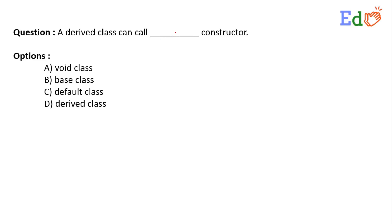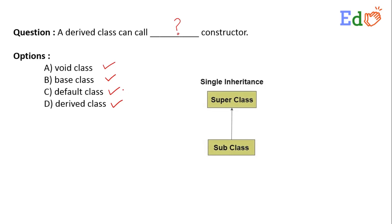In this question, we are asked: a derived class can call one blank space constructor. The options are: void class, void class constructor, base class constructor, default class constructor, and derived class constructor. We know that in case of single inheritance, we have one super class, also called the base class, and one subclass or derived class. So the derived class can call which class constructor?